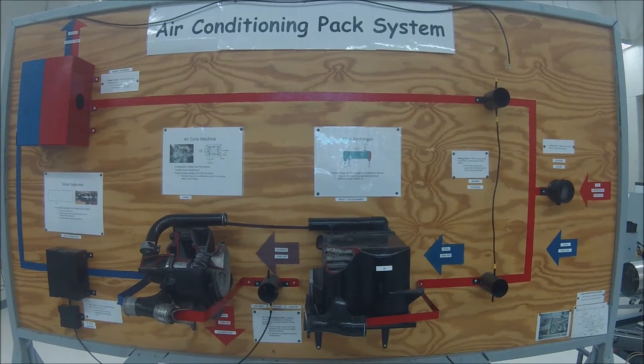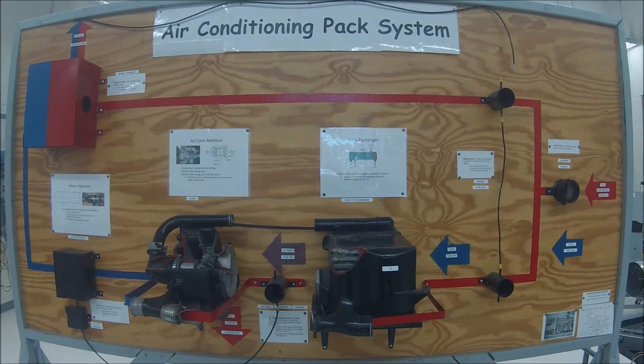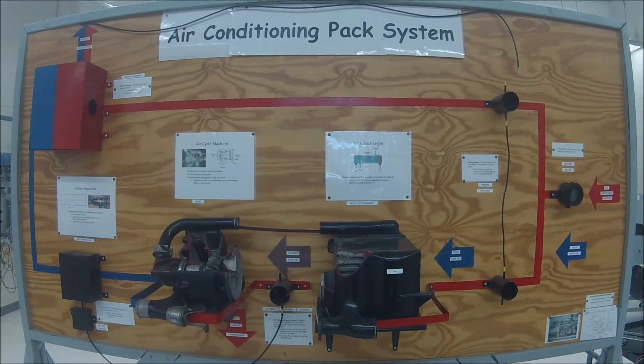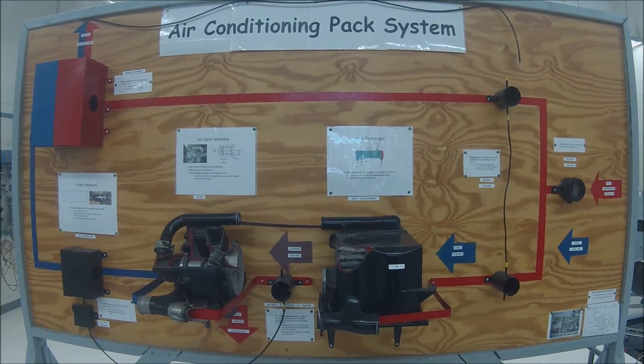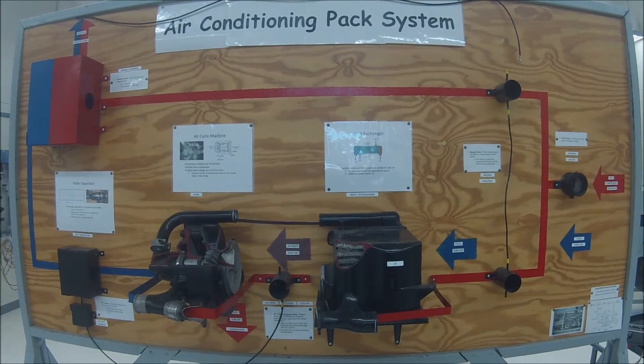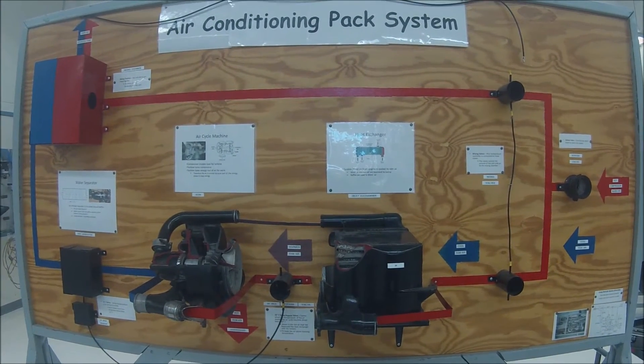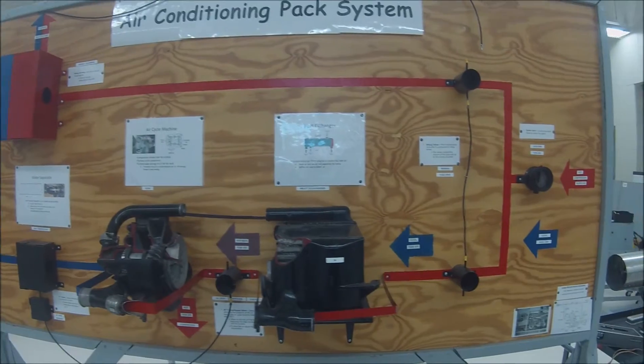Conditioned air comes from either the aircraft system or a ground source, for example the engines, auxiliary power units, or a ground cart. We will be explaining how it is processed through an air conditioning pack for the CRJ200.